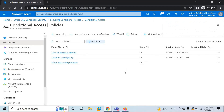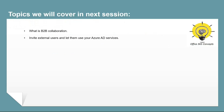As per your business requirements, you can create different types of Conditional Access Policies. In the next video, we will talk about B2B collaboration — I'll demonstrate how to invite external users to your tenant and how an external user can access services in your Azure AD tenant. If you learned something new, please write in the comments, subscribe to the channel, and share it within your community. Thank you guys, take care, and I'll see you in the next video.